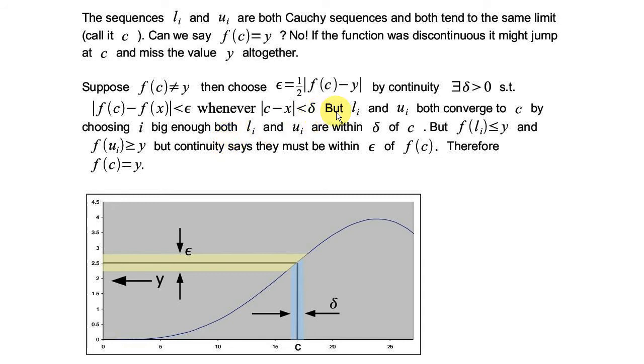So by continuity there exists a delta such that whenever you're within delta of c, the function is within epsilon of f of c. And what else do we know? Well, we know that li and ui converge to c. So, because c is the limit of ui, and li as well, we know there's a particular value of n, so that whenever i is greater than n, li is going to be within delta of c. And similarly, we know there's another value, probably a different one for u, where whenever i is greater than that value of n, ui lies within delta of c. So we take the maximum of those two values of n, and then we know we've got an interval from ui to li that lies entirely within c.